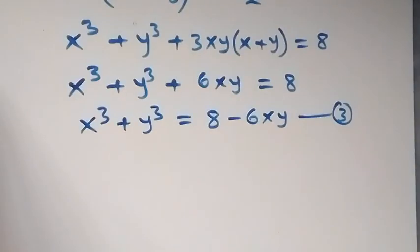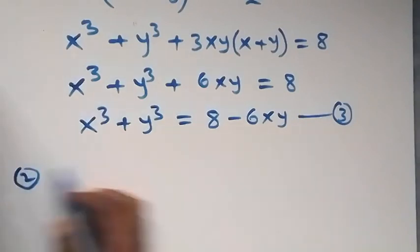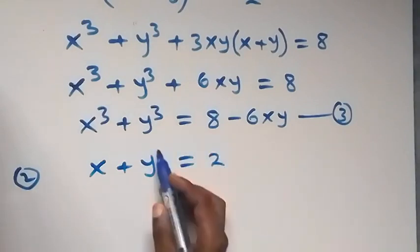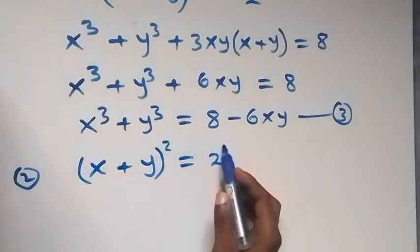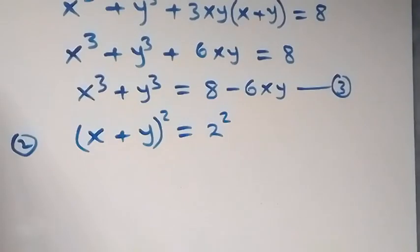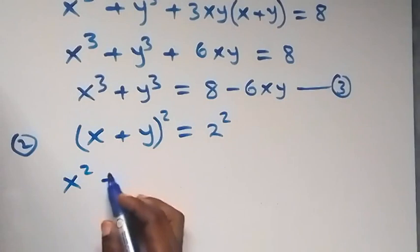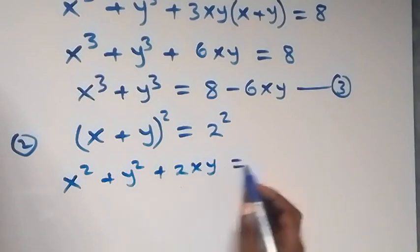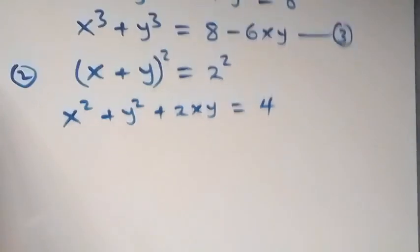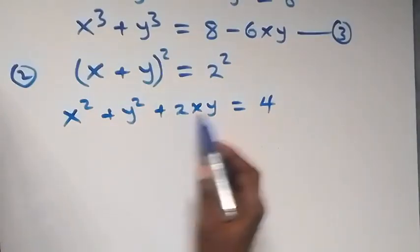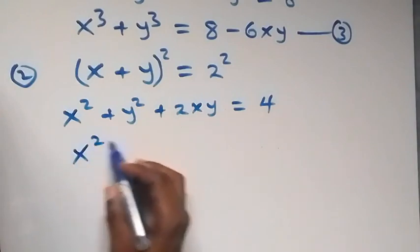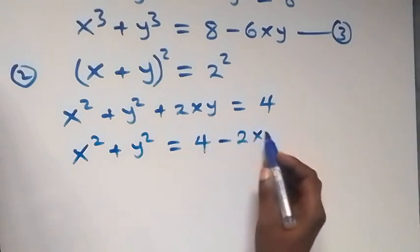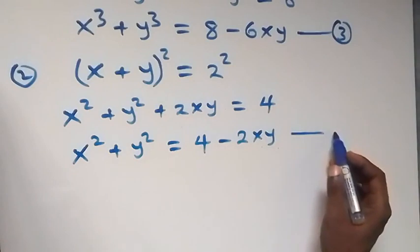Also from equation 2, we have x plus y equals to 2. Let's square both sides. The expansion gives us x squared plus y squared plus 2xy equals to 2 squared, which is 4. Taking 2xy to the other side, we have x squared plus y squared equals to 4 minus 2xy. Let's label this as equation 4.